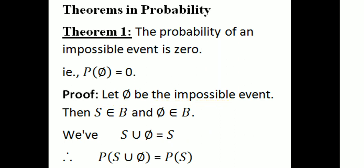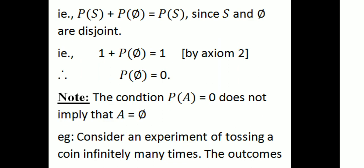Let ∅ be the impossible event. Then S belongs to B and ∅ belongs to B, where B is the Borel field. We have S ∪ ∅ = S. S and ∅ are disjoint. Then, probability of S ∪ ∅ is equal to probability of S. Since S and ∅ are disjoint, P(S ∪ ∅) = P(S) + P(∅) = P(S). By axiom 2, P(S) = 1.